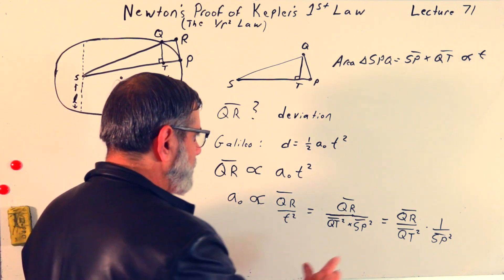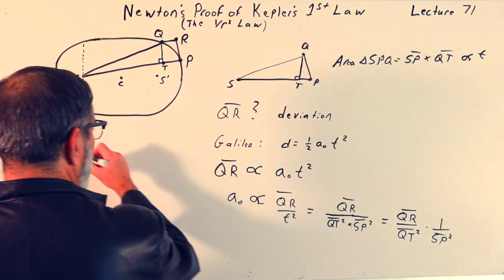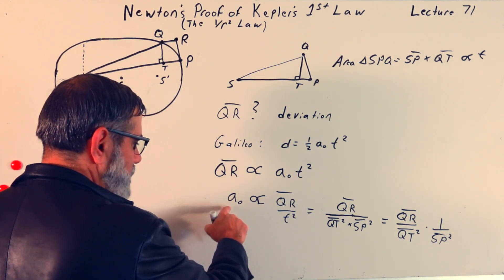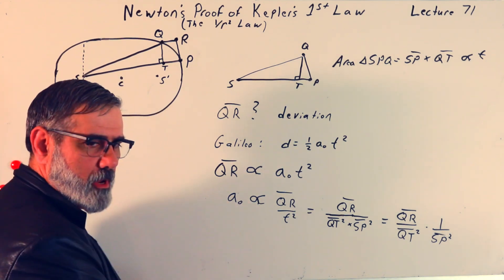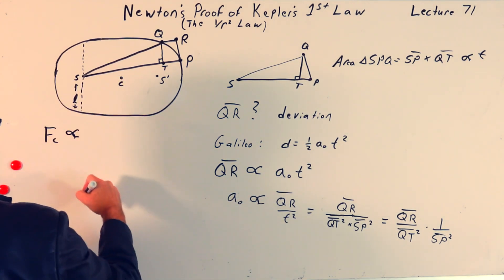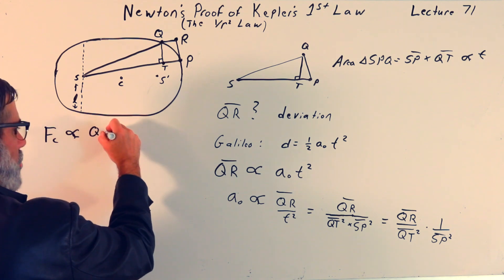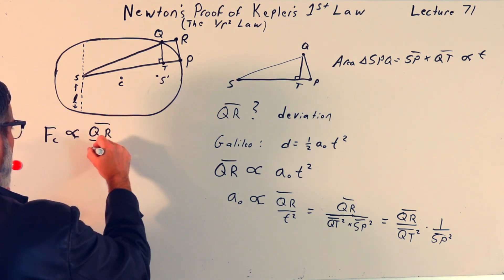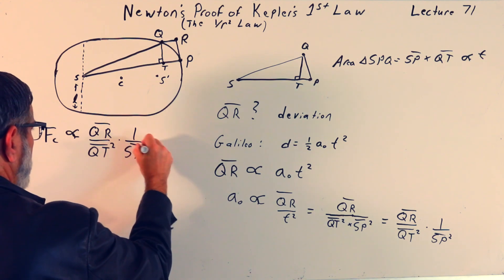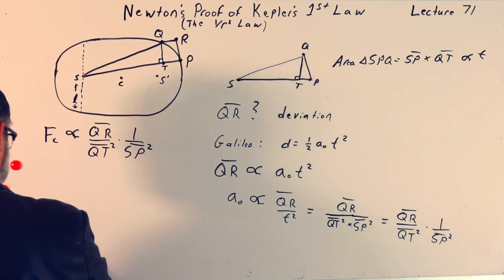All right, so, let me try to put a summary here. We want, and then, of course, if I multiply this times mass, then we have force. So, the force is, the centripetal force is proportional to this acceleration. So, we can say that centripetal force is proportional to QR over Qt squared times 1 over Sp squared.